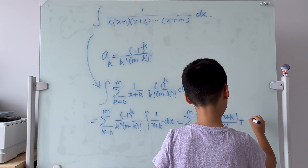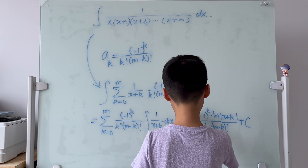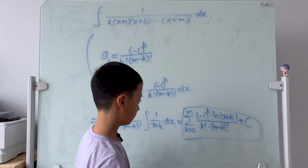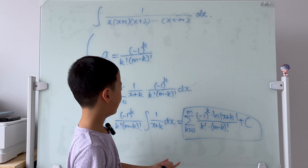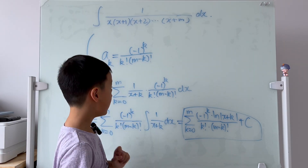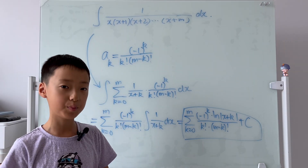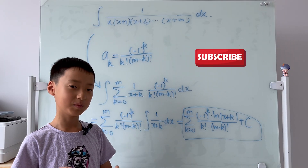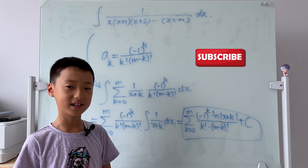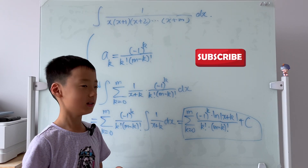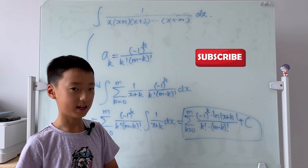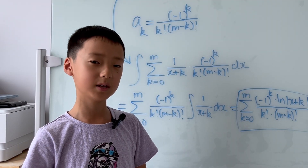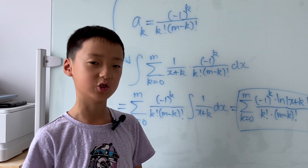All in all, this will become the sum from k equals 0 to m of negative 1 to the power of k times ln of the absolute value of x plus k, divided by k factorial times m minus k factorial, plus C. And so this is the final answer of the integral that really perplexed me the other day. Thank you guys so much for watching, and if you like more videos like this, please consider liking and subscribing. If you want to master something, teach it. Thank you.